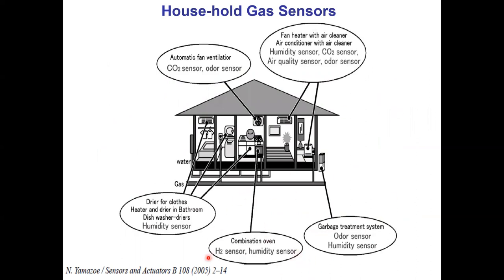This figure, borrowed from an article by Professor Yamazwai, shows all kinds of needs for gas sensors — particularly CO2, humidity, hydrogen, CO, and others — including for home applications monitoring the health of electronic systems like refrigerators, electric furnaces, and home heating furnaces. Many Japanese houses already come with some of these chemical sensing devices.